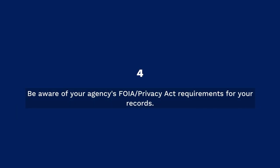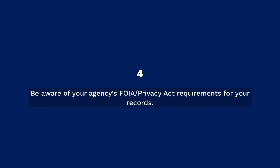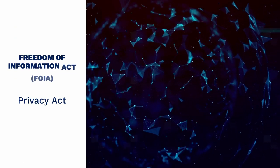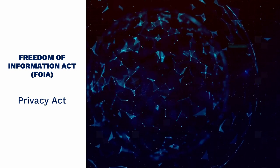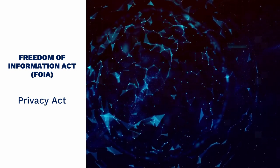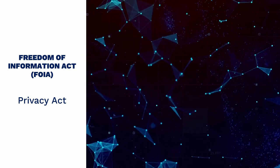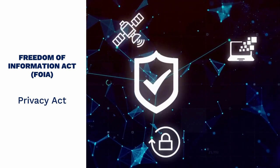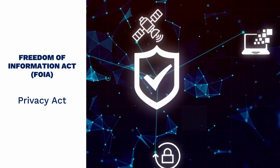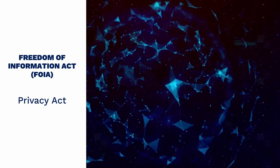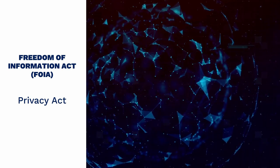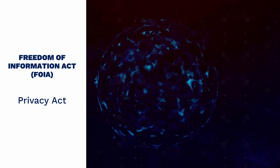Number four: you need to be aware of your agency's FOIA and Privacy Act requirements for your records. Federal agencies are accountable to the public, and the records that you create and use may be requested for viewing under the Freedom of Information Act (FOIA). On the other hand, if you work with confidential or sensitive information, your records might be non-releasable under the FOIA or Privacy Act. Connect with your agency's information management resources to determine how these laws apply to your records.